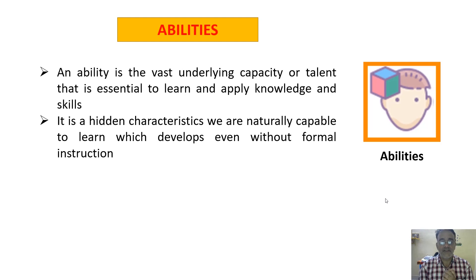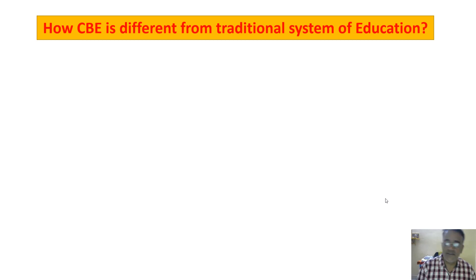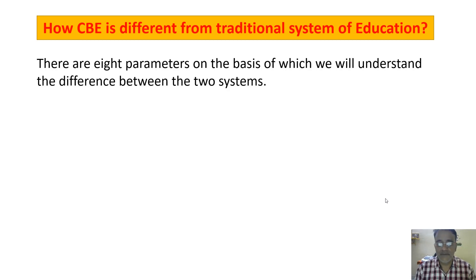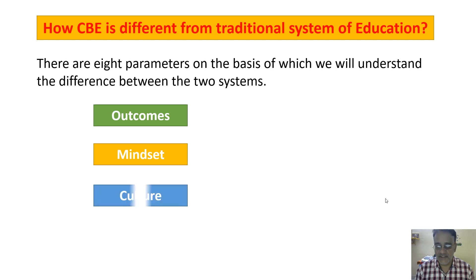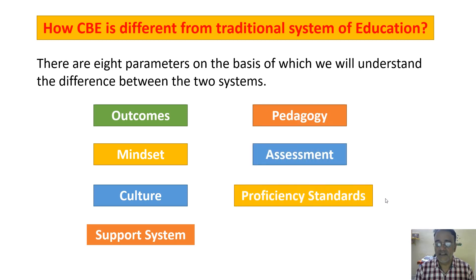So this is the introduction of competency-based education, and now we are moving toward our main topic: how CBE differs from the traditional system of education. We are going to differentiate them on the basis of eight areas: first, outcomes; second, mindset; third, culture; fourth, support system; fifth, pedagogy; sixth, assessment; seventh, proficiency standards; and the last one, advancements. We will see them one by one.